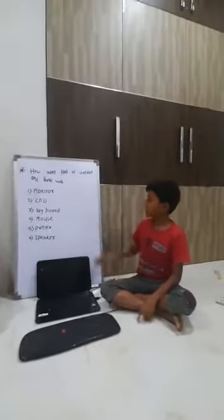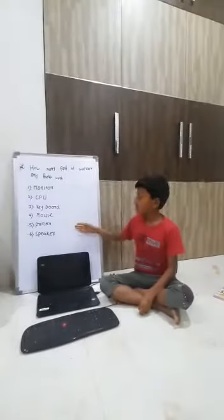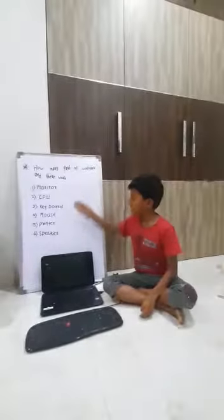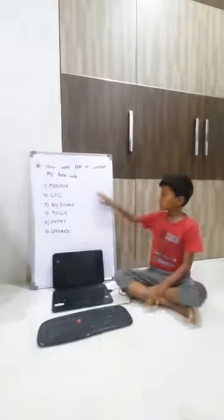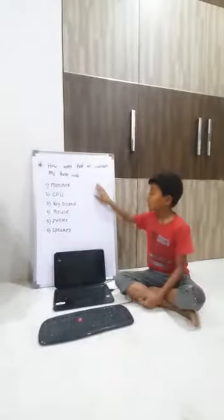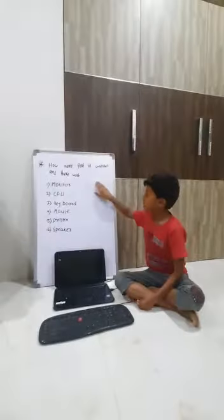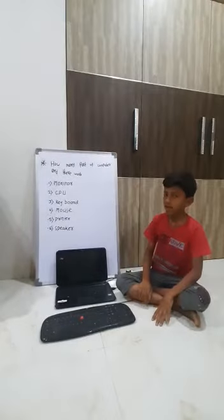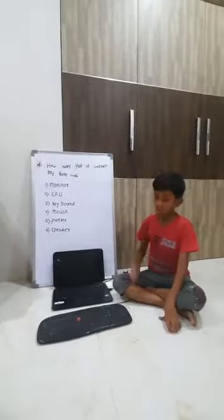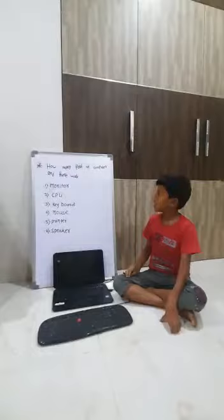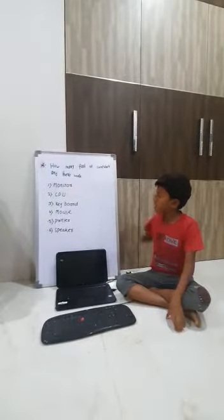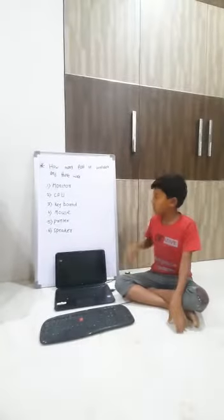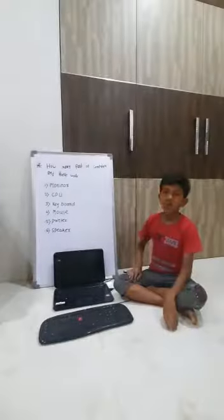There are six parts of computer. First is monitor. Here it looks like a television. It shows our work and it is an output device. Second is CPU. CPU stores information.